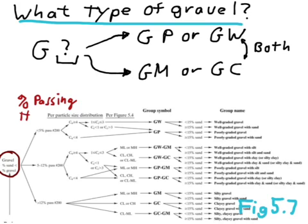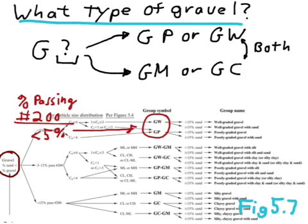We've already determined that it's a gravel. Then we look at the percent passing the number 200 sieve to determine which of these methods we're going to use to classify it. If there's less than 5% fines, that's the small amount of fines, and the soil is going to classify either as a GW or a GP.